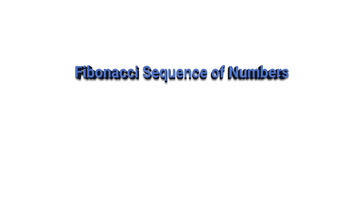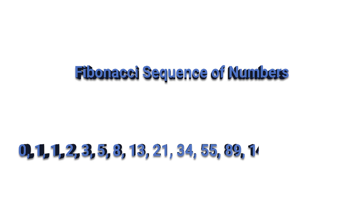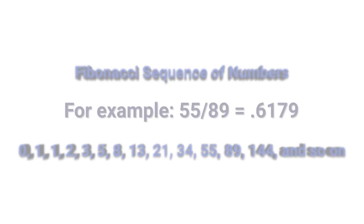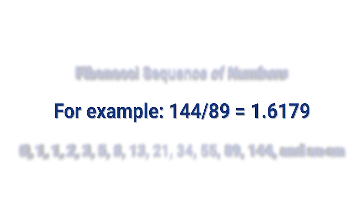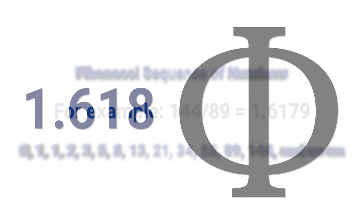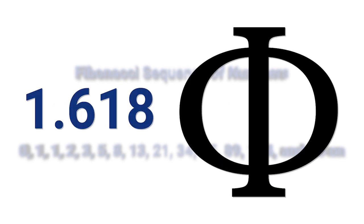Fibonacci numbers follow a sequence that begins with zero and one, and each subsequent number is the sum of the previous two. After the first several numbers in the sequence, the ratio of any number to the next higher is approximately 0.618 to 1. Its ratio to the next lower number is approximately 1.618 to 1. This is known as the golden ratio.